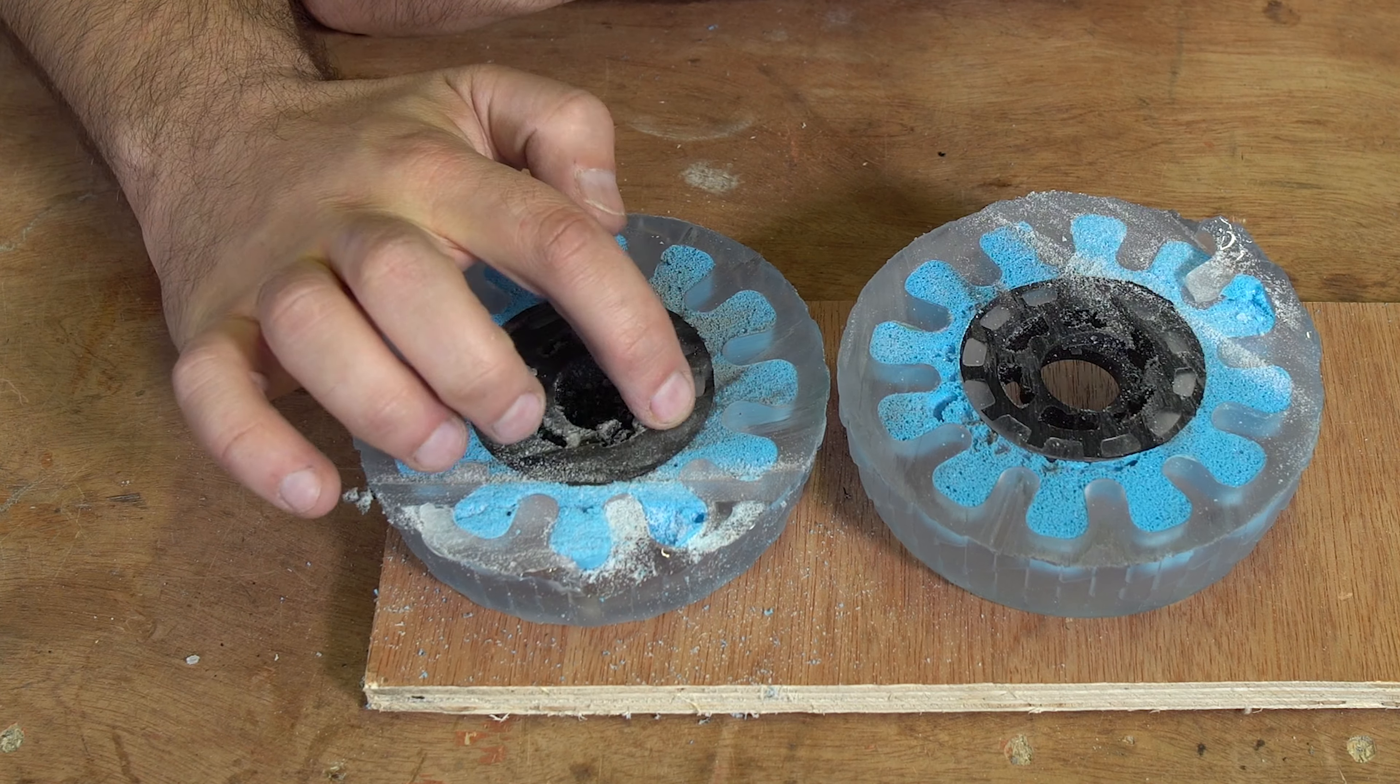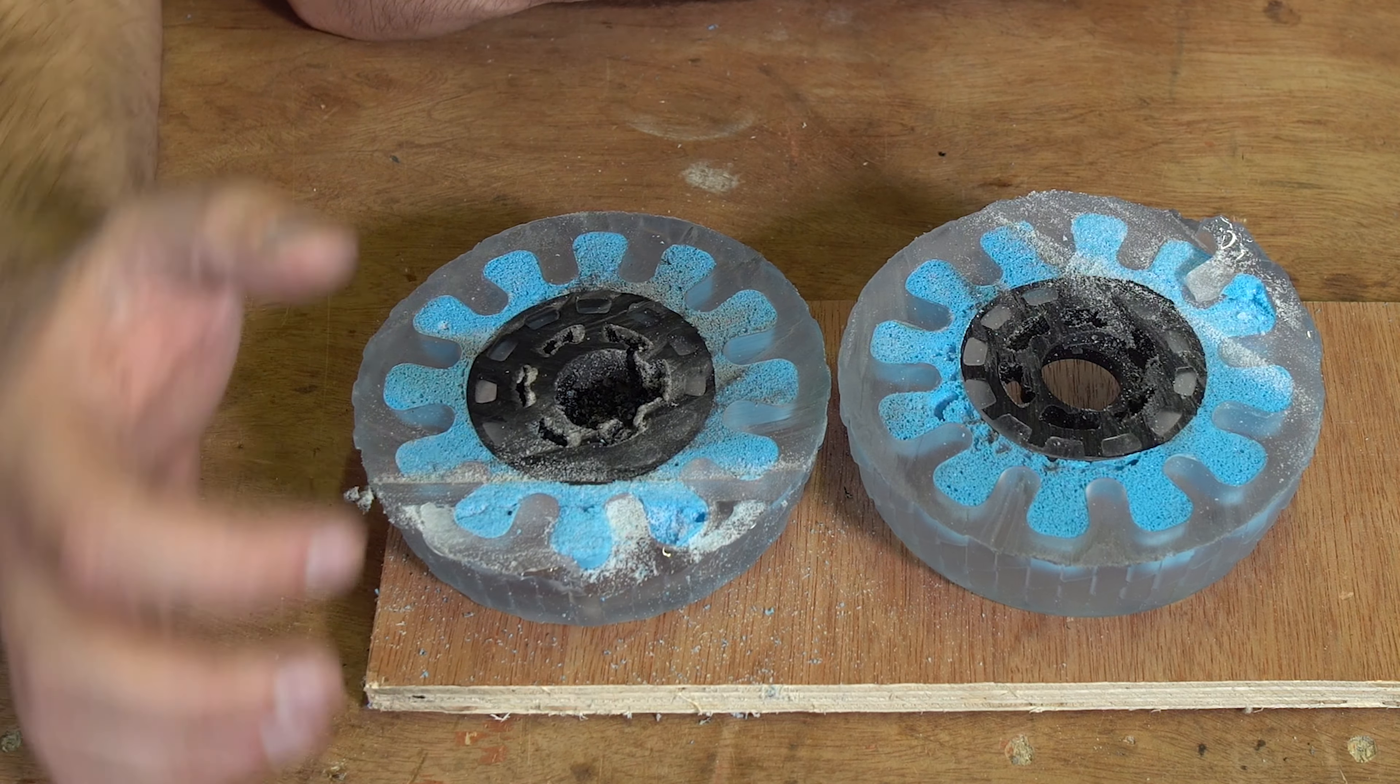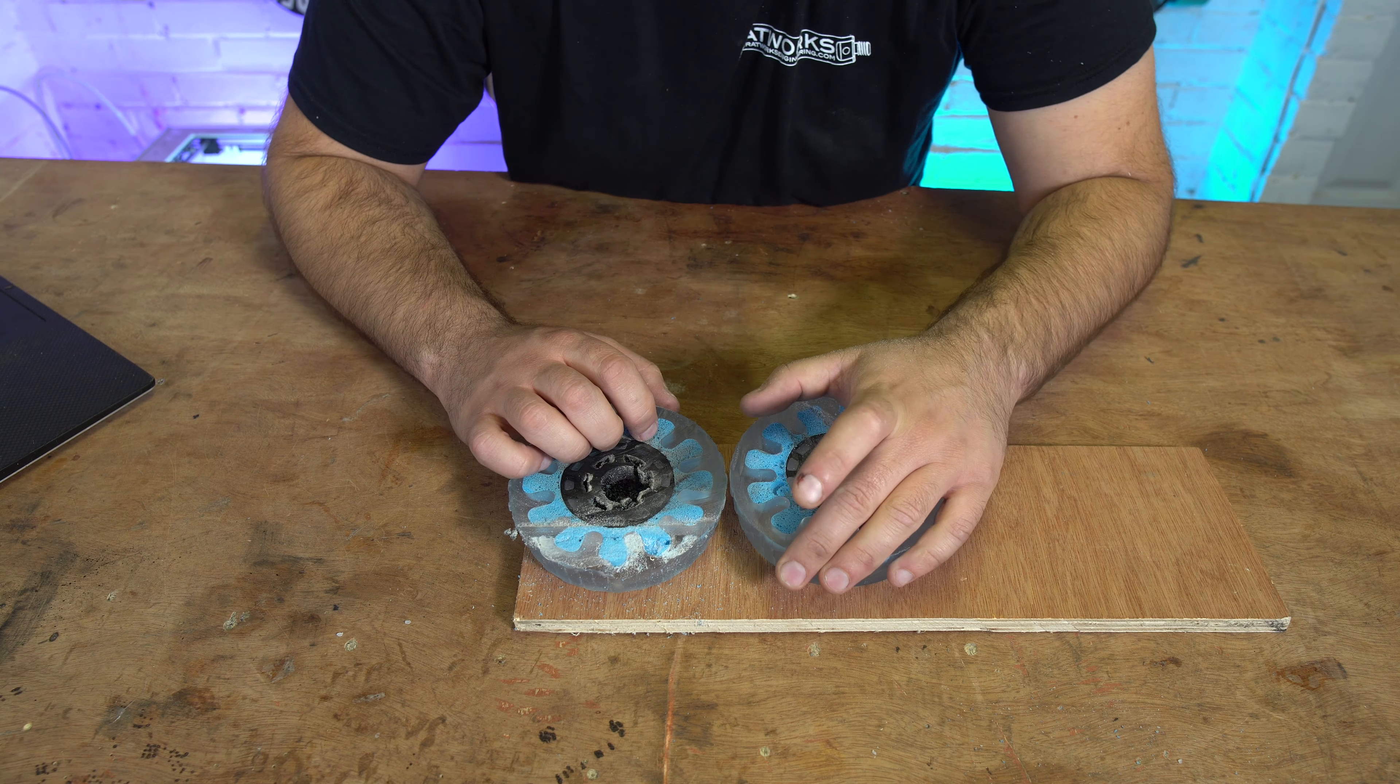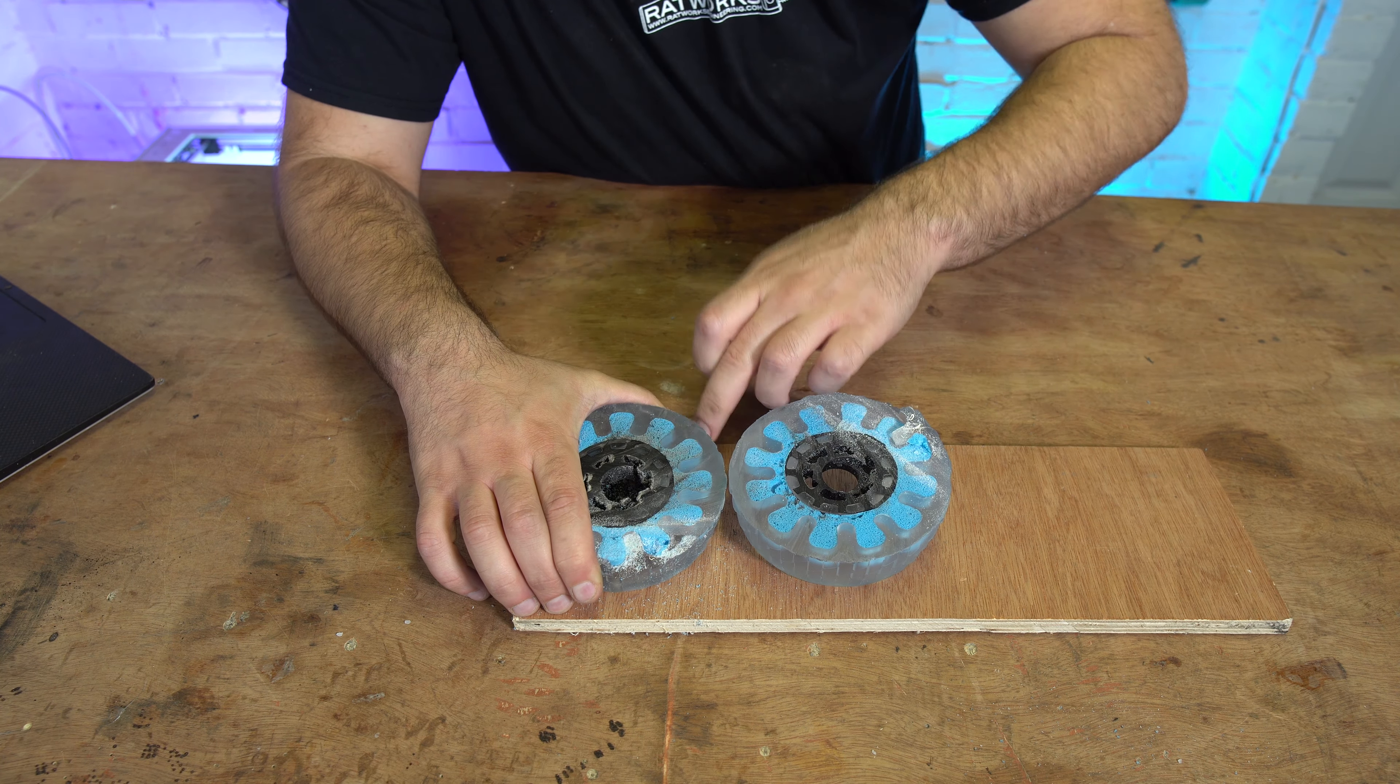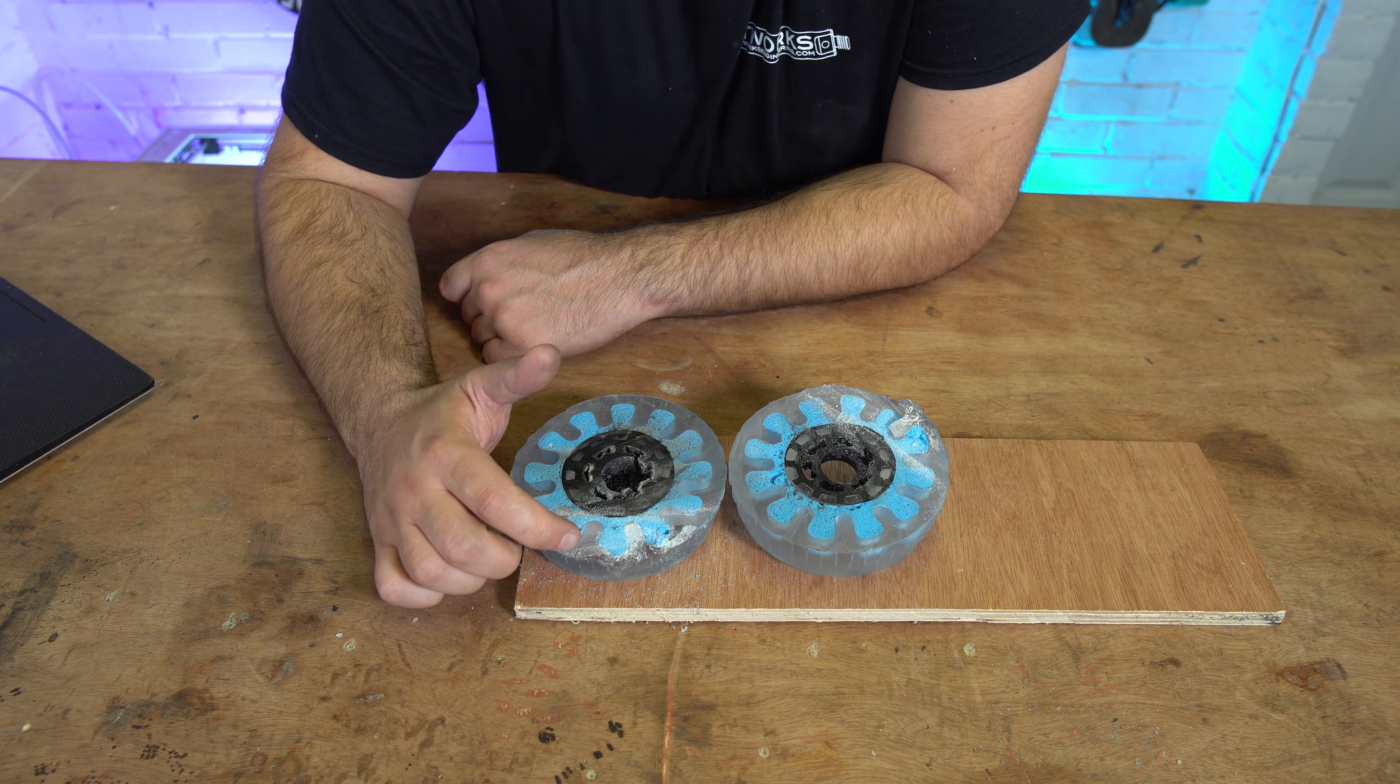I think there's a cool detail here. I'm not sure whether other wheels did this because this is the first set of wheels I've ever cut open. Look at the core - you've got these gaps in the core so the urethane when it's poured can go through the core, and that helps lock the core to the urethane.